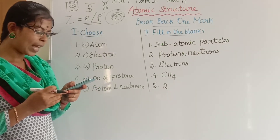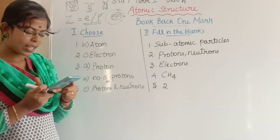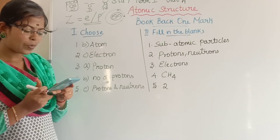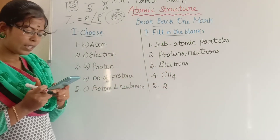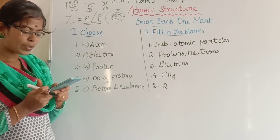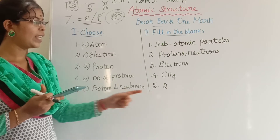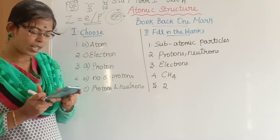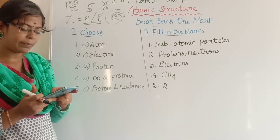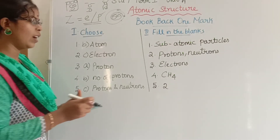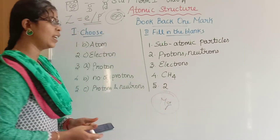Second question: the nucleus has dash and dash. The nucleons in the nucleus are protons and neutrons. Third question: dash revolves around the nucleus — electrons revolve around the nucleus. Fourth question: if the valency of carbon is 4 and that of hydrogen is 1, then the molecular formula of methane is dash — methane is CH4. Fifth question: there are two electrons in the outermost orbit of a magnesium atom, so the valency of magnesium is —